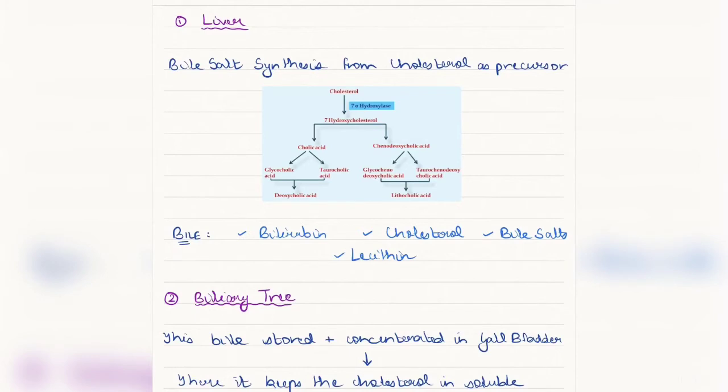Bile salt synthesis actually takes place from a precursor molecule which is known as cholesterol. Cholesterol gets hydrolyzed into two parts, as you see in this diagram: cholic acid and chenodeoxycholic acid, via the enzyme 7-alpha-hydroxylase. These cholic acid and chenodeoxycholic acid are attached with two amino acids, that is glycine and taurine, which form the four bile acids.